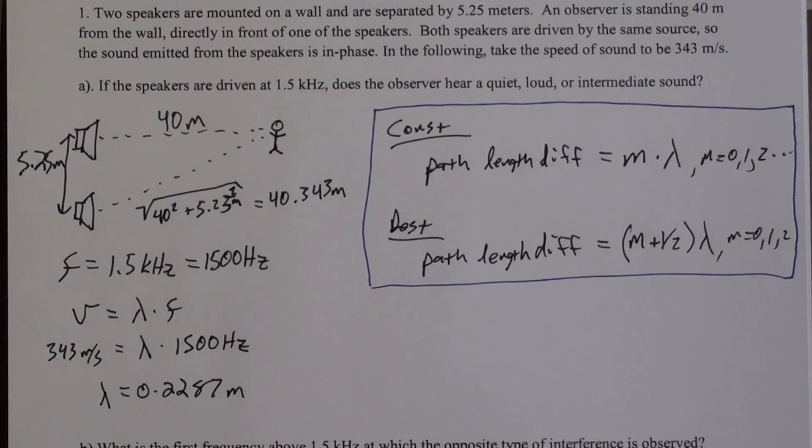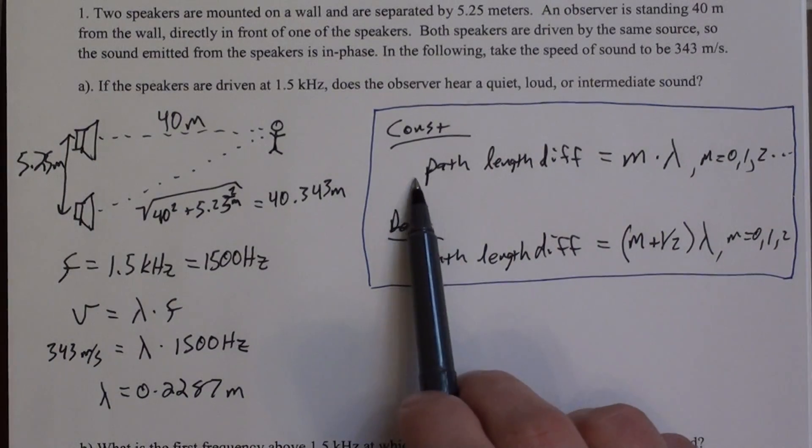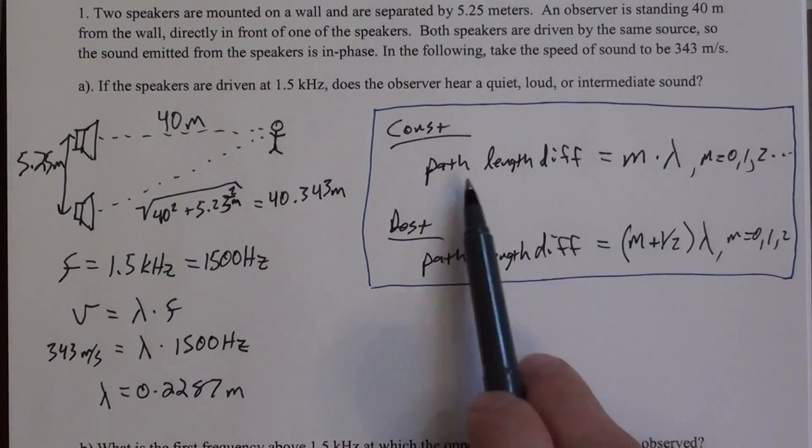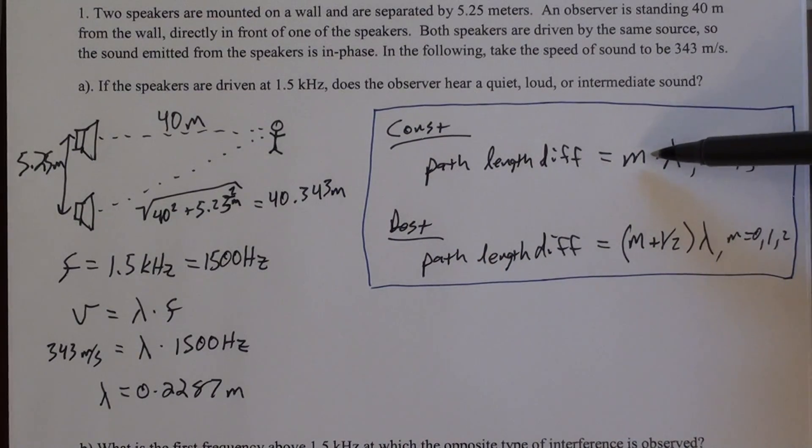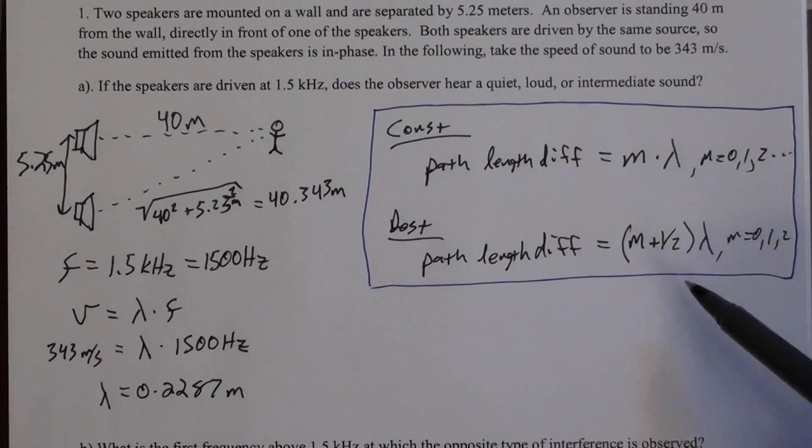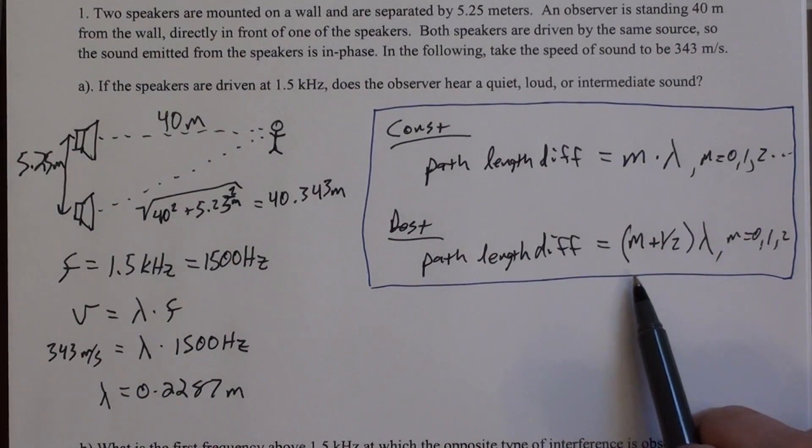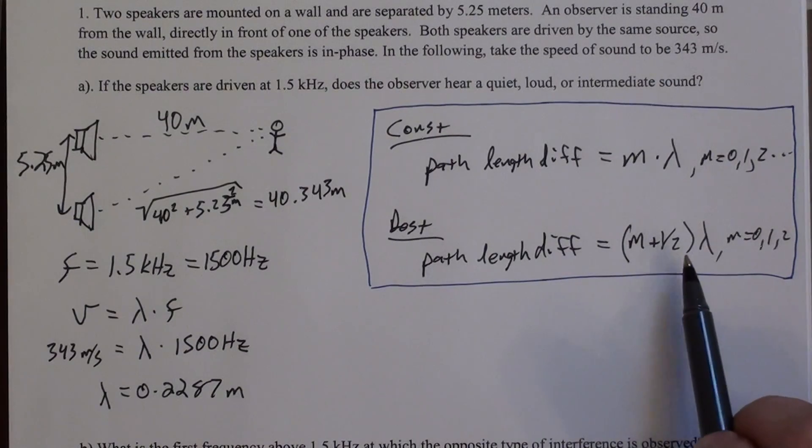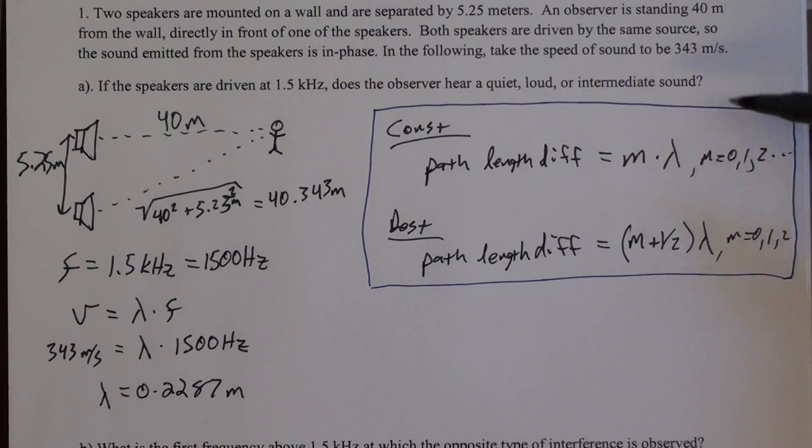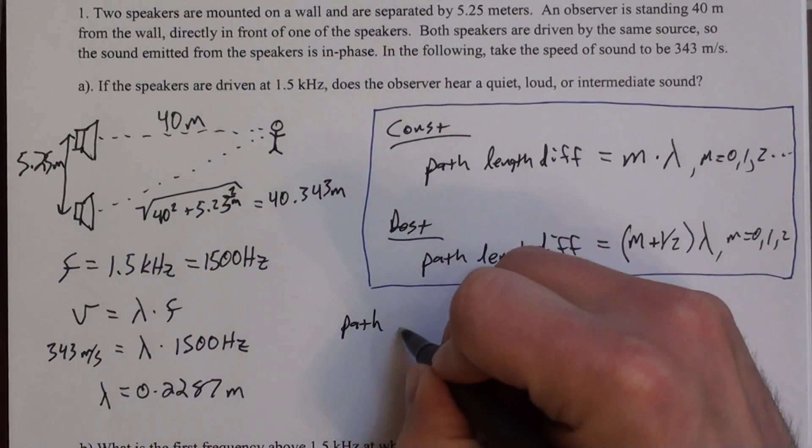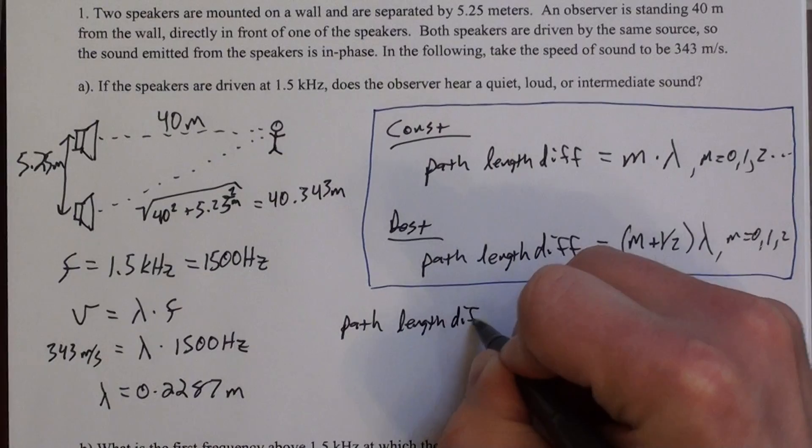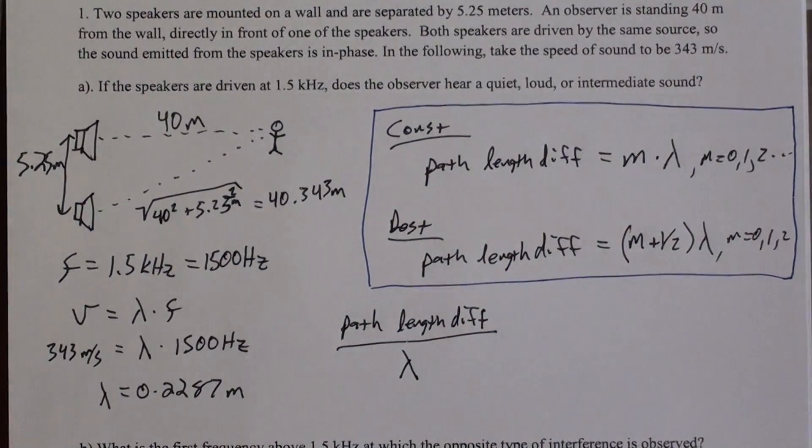So to test whether it's one or the other of these, I'm going to take the ratio of the path length difference and lambda. Because each of these equations has that in it. And if I get an integer, then I know it's constructive interference. If I get an integer plus a half, so like 0.5 or 1.5 or 2.5, then I know it's destructive. If I get something else, that just means it's neither one of these, and it would be an intermediate sound. Not the loudest, not the quietest, just somewhere in between.